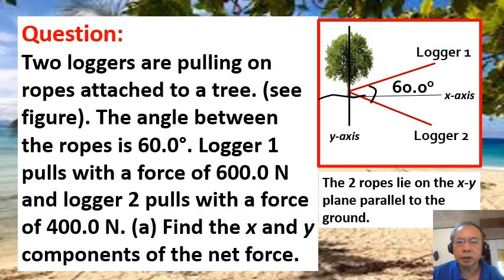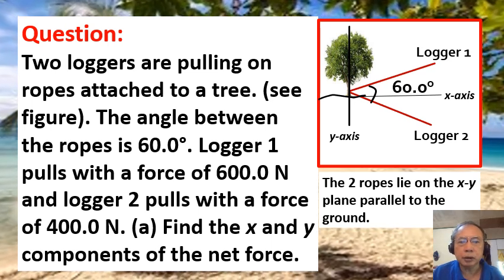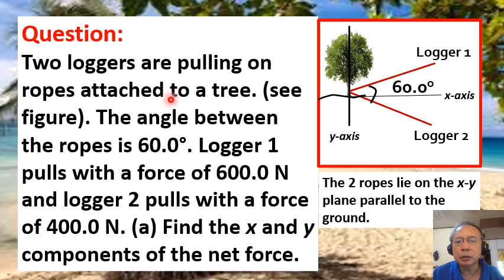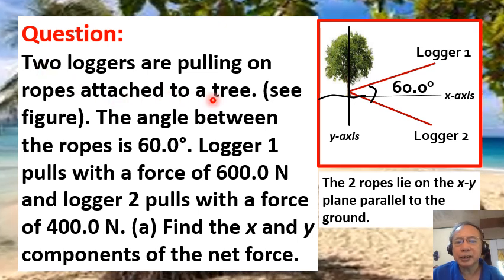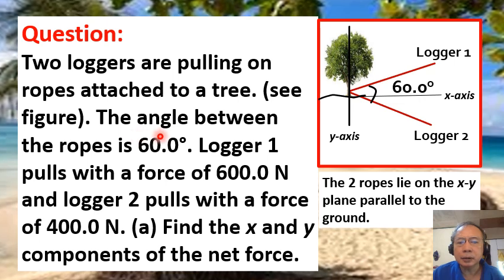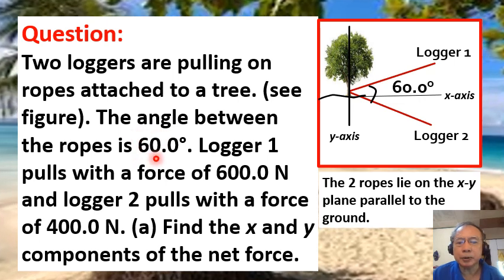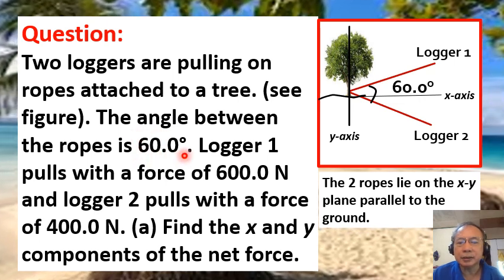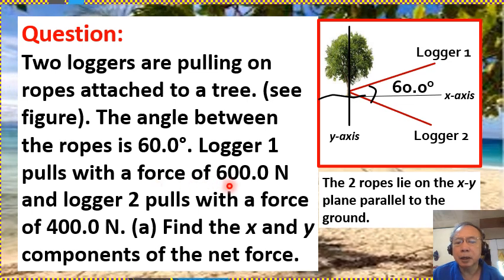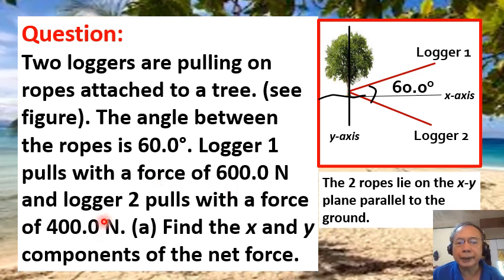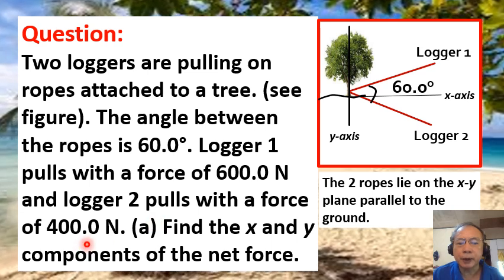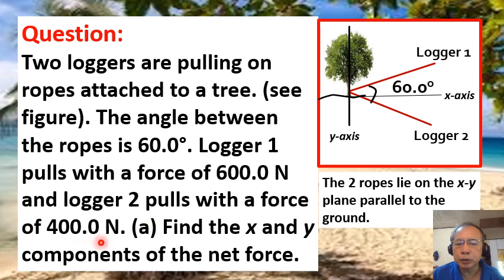Here is the question. Two loggers are pulling on ropes attached to a tree. The angle between the ropes is 60.0 degrees. Logger 1 pulls with a force of 600.0 Newton and Logger 2 pulls with a force of 400.0 Newton.